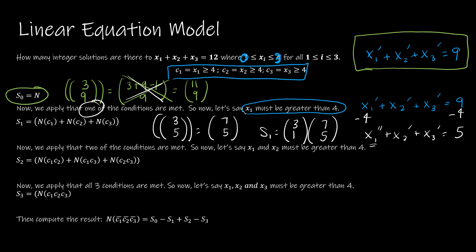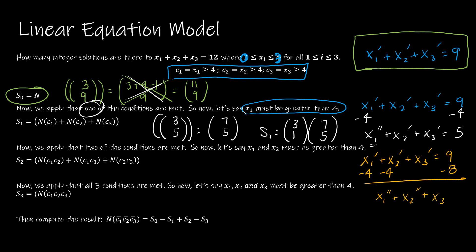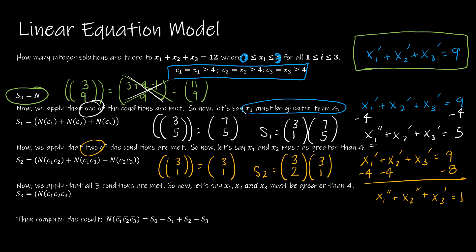For S2, two conditions are met, so we subtract 4 twice: x1'' + x2'' + x3' = 1. With 3 bins and sum 1, that's C(3,1). Since we're choosing 2 of the 3 conditions, S2 = C(3,2) · C(3,1).